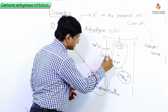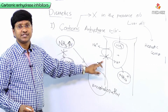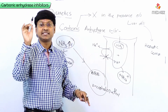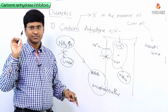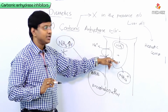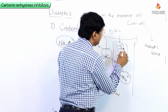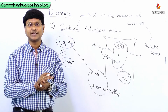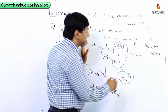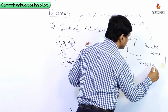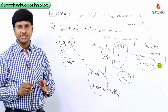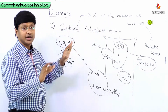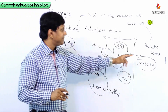Once you give carbonic anhydrase inhibitors, they decrease the secretion of H+ into the tubules. As a result, ammonia is not converted into ammonium. The ammonia that was filtered is instead reabsorbed back into the circulation, and this reabsorbed ammonia causes toxicity in the individual.